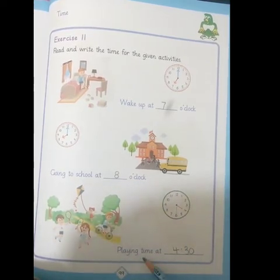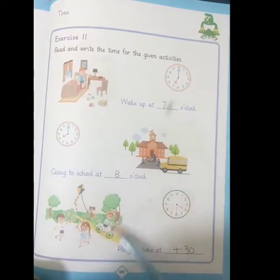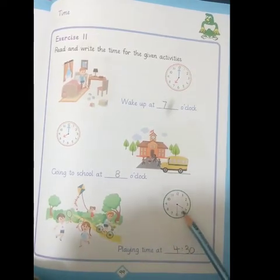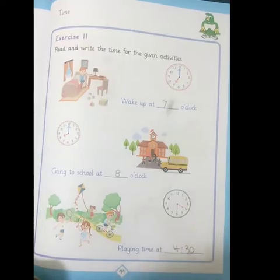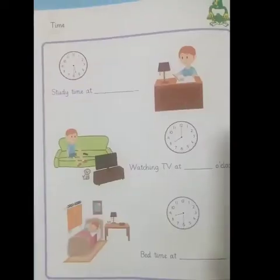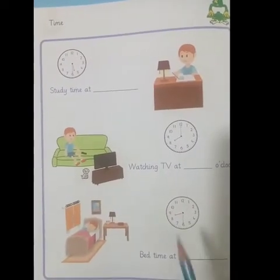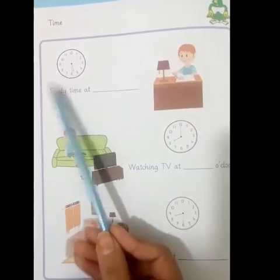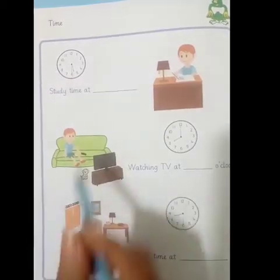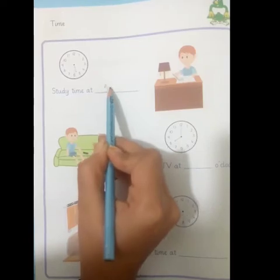Playing time — you can see it's 4:30, so we will write 4:30 here. Now moving towards page number 100. Study time — it's 5:30, so we will write 5:30 here like this.